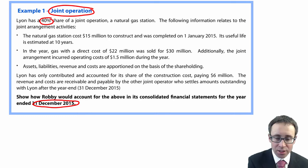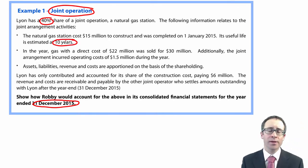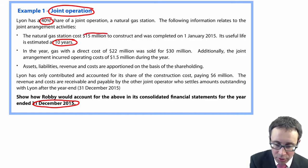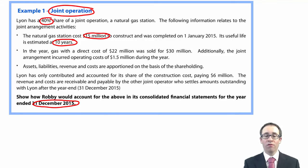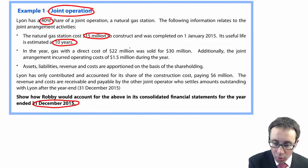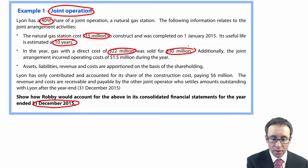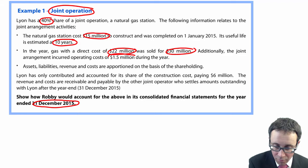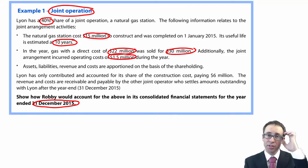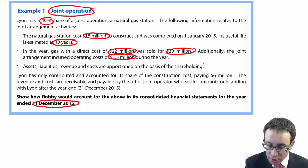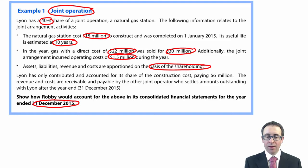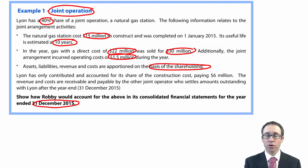The following information relates to the joint arrangement activities: the cost was 15 million to construct and was completed at the start of the year, so we depreciate it over 10 years. We want to account for our share — 40% of the 15 million. In the year, gas with direct cost of 22 million was sold for 30 million revenue. There are also operating costs of 1.5 million — we'll need to take our share of those costs too. Assets, liabilities, revenues, and costs are apportioned on the basis of the shareholding, so a 40% holding applies throughout. Leon has already contributed and accounted for its share of the construction costs, paying 6 million — which is 40% of 15 million.